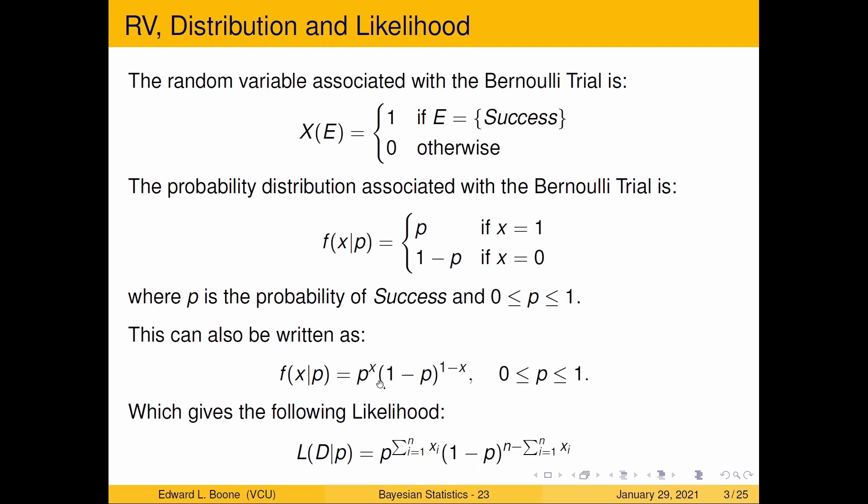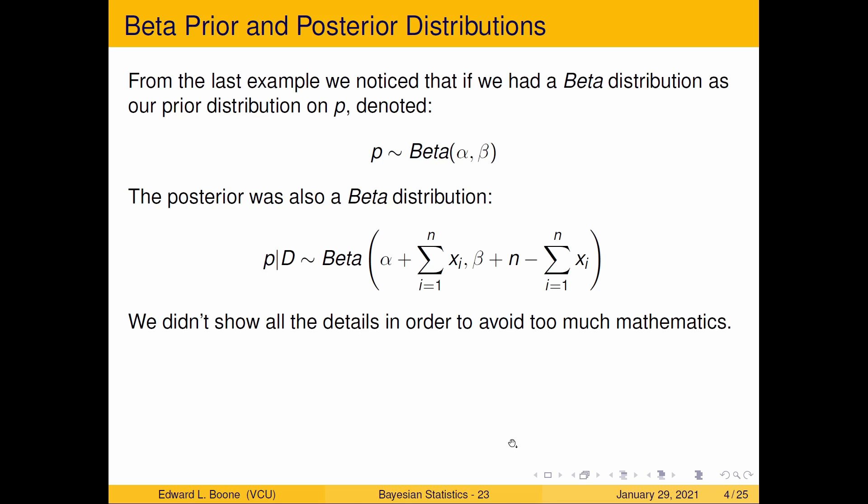You can also rewrite it like this, and we've seen that this gives us the following likelihood. Last time we saw that if we had a beta prior on p, which is probability of success, and beta has parameters alpha and beta, the posterior was also beta.